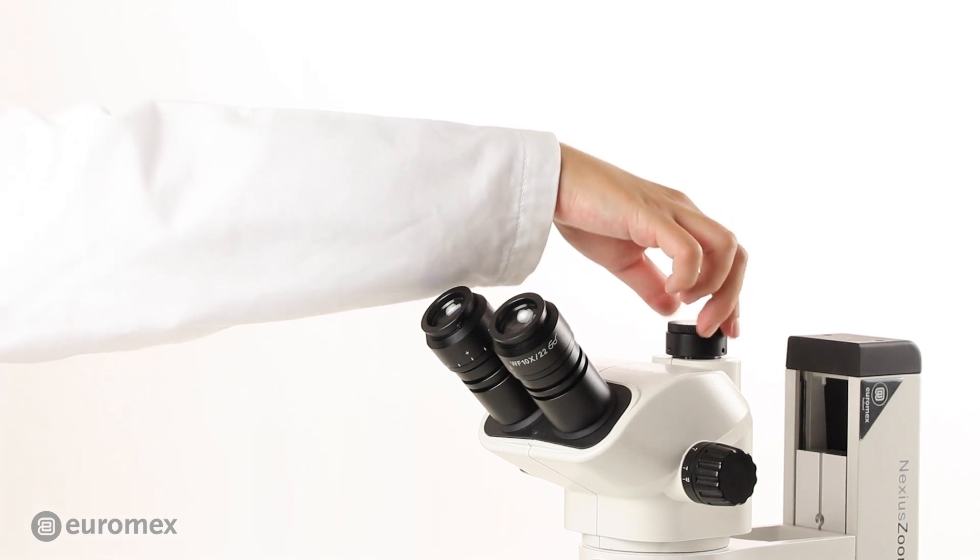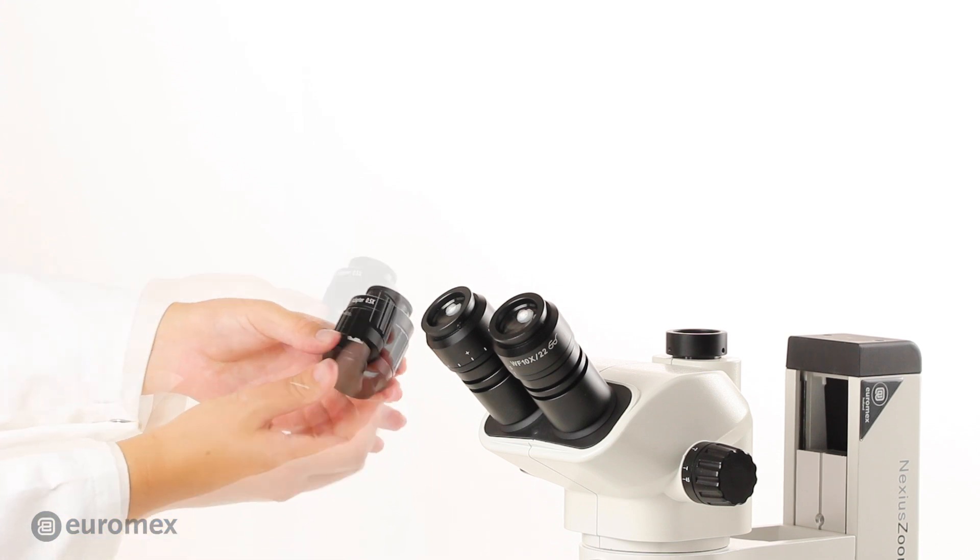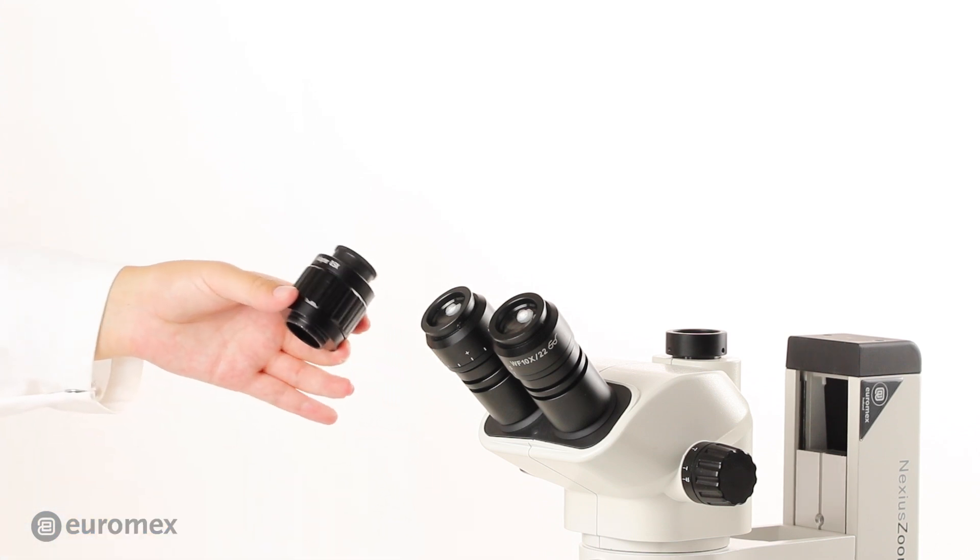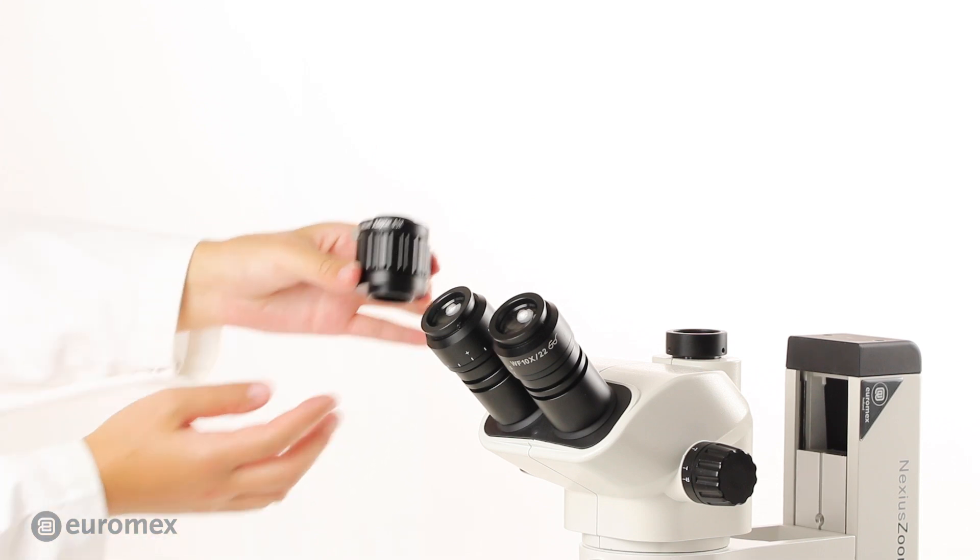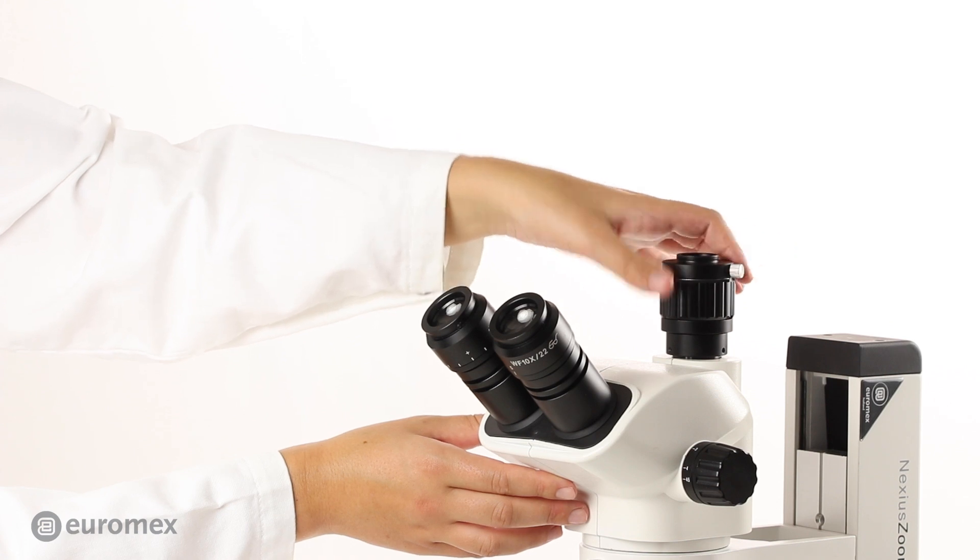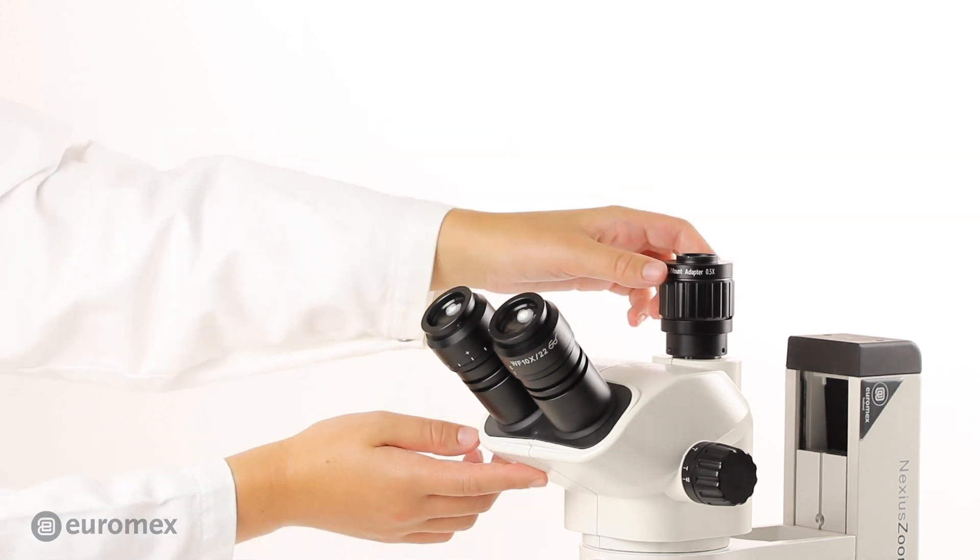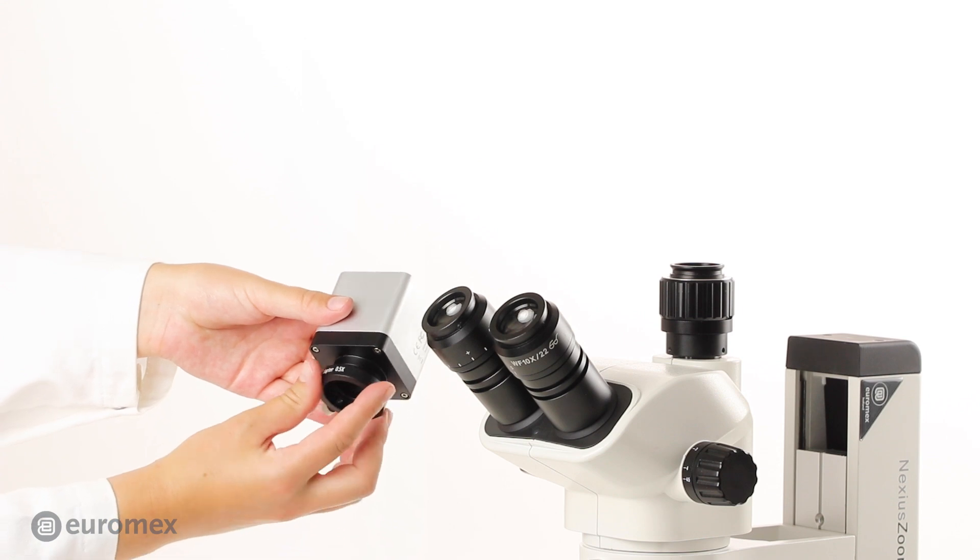How to proceed with an adjustable C-mount adapter: Remove the caps from the adjustable C-mount adapter, remove the ring on the top, and attach it to the camera.